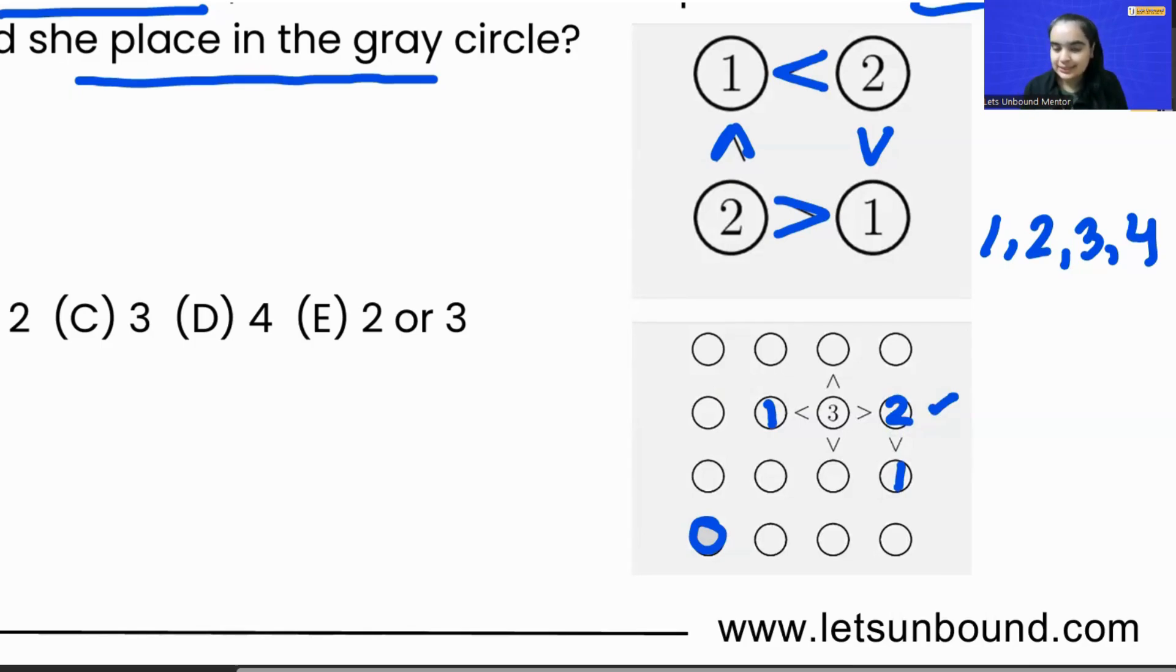Now at the top, we can say, let's assume 2 is there. But the thing is, we cannot put 2 over here. So over here, if we are going to put 2, right, and here as well 2, so that won't work because 1 is already here, right?